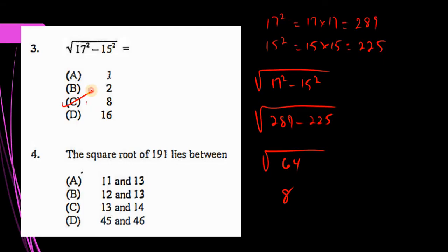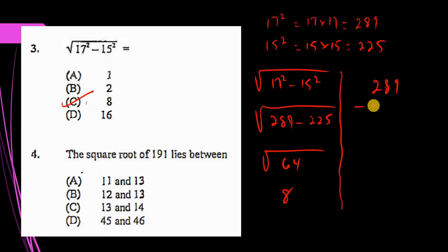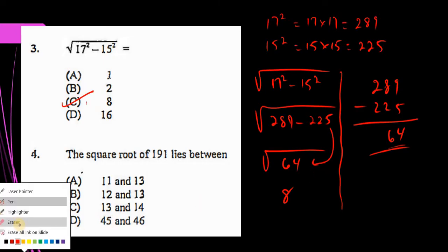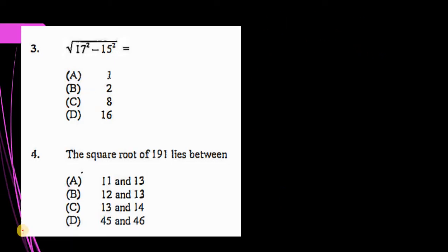So 17 squared minus 15 squared is really 289 minus 225. When we subtract these, we get 64, and the square root of 64 is 8. So our answer is C. To verify: 5 from 9 is 4, 2 from 8 is 6, 2 from 2 is 0, giving us 64.